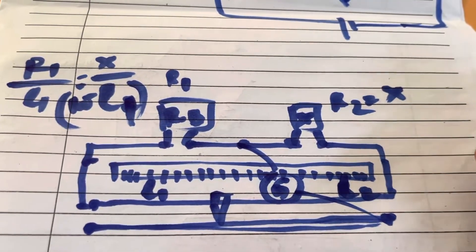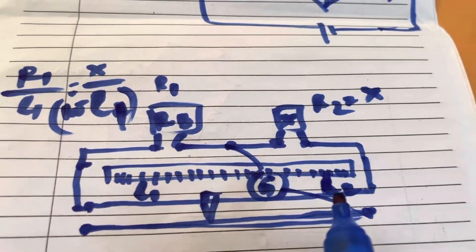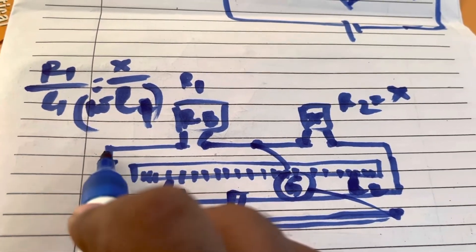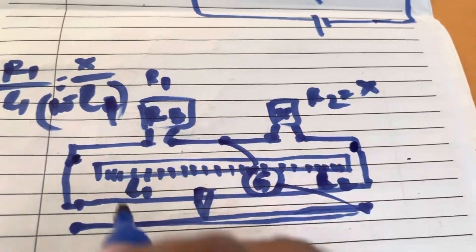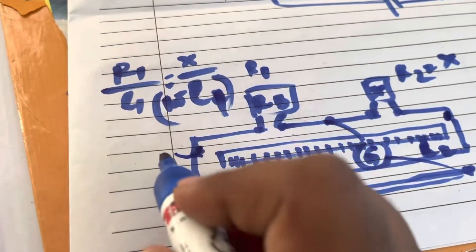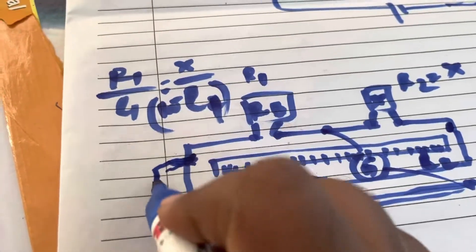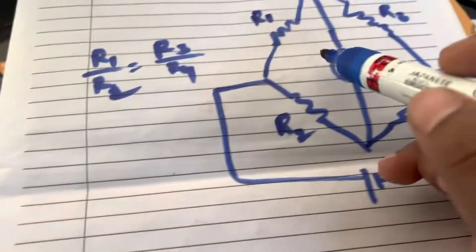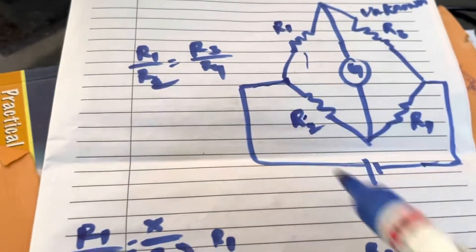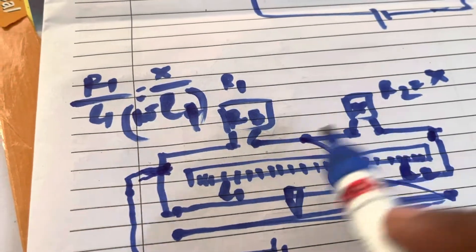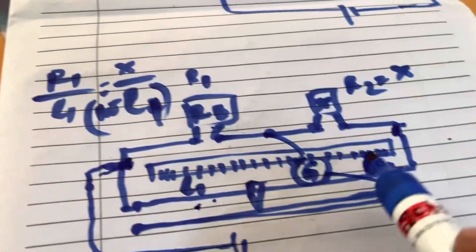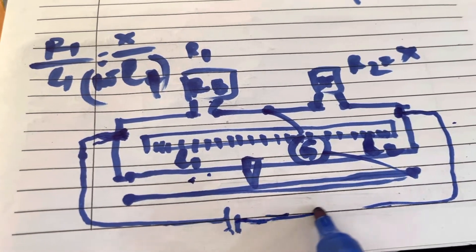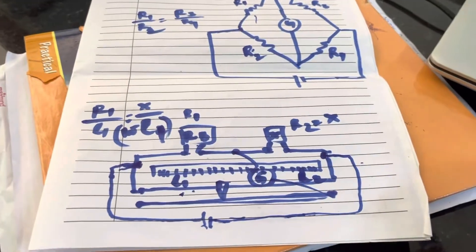This is the circuit diagram for the meter bridge. We have the resistance box and the unknown resistance, with the galvanometer connected from the midpoint to the jockey. You connect the battery eliminator or power source at the two end terminals, providing voltage across the two resistors in the upper part, while the conductor below acts as the other two resistors.